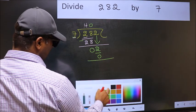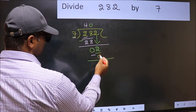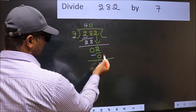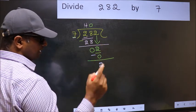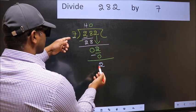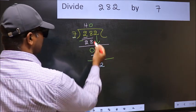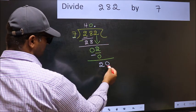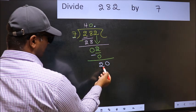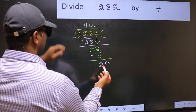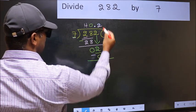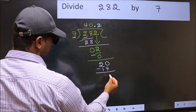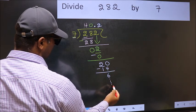Now you should subtract. 2 minus 0, 2. Over here, we did not bring any number down. And 2 is smaller than 7. So now you can put dot and take 0. So 20. A number close to 20 in 7 table is 7 to 14. Now you should subtract. You get 6. And continue the division.